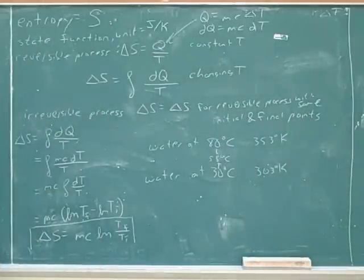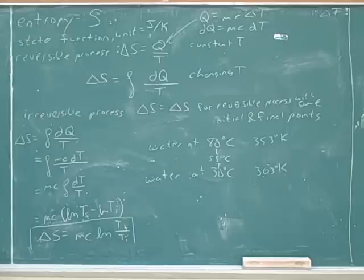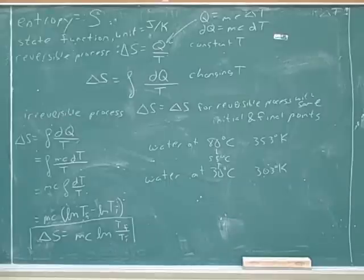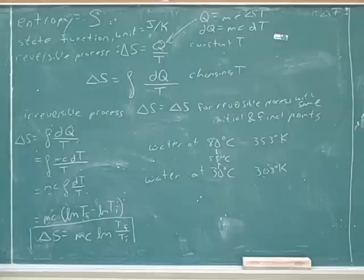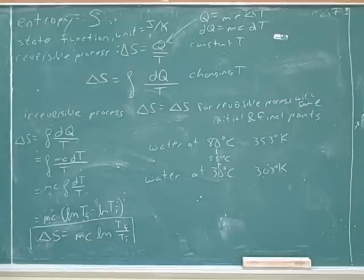Looking at the handout on entropy, this page covers ideal gas processes. We've just gone over these basic ideas: ΔS for a reversible constant temperature process, and for a reversible changing temperature process. For an irreversible process, you think about ΔS for a similar reversible process with the same initial and final points. It also covers how to find ΔS for phase changes and temperature changes — the approximate approach and the exact calculus-based approach.